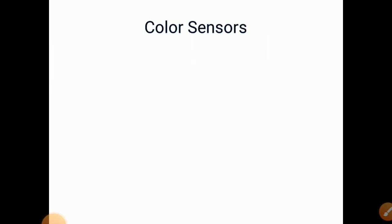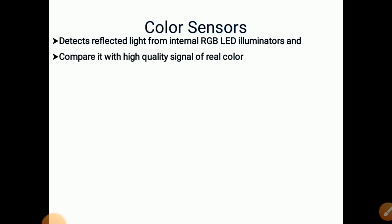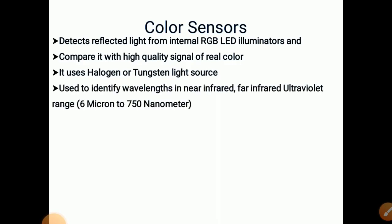Now let's study color sensors. It detects reflected light from internal RGB LED illuminators, red, green and blue LED illuminators, and we compare it with high quality signal of real color. It uses halogen or tungsten light as a source. It is used to identify wavelengths in near infrared, far infrared, ultraviolet range, 6 micron to 715 nanometers.